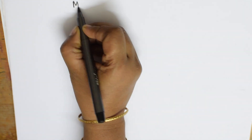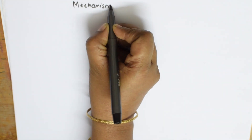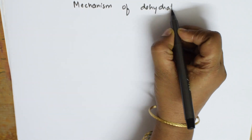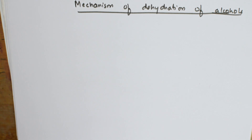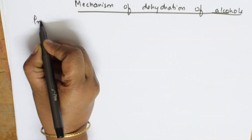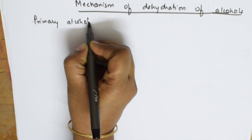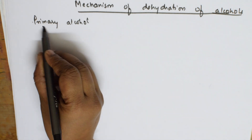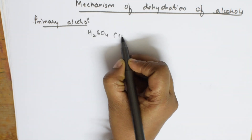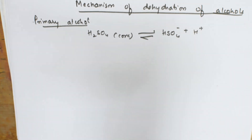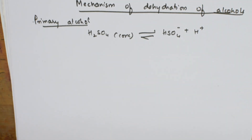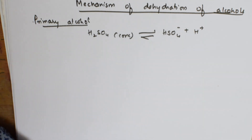Now let me write the mechanism. The heading is: mechanism of dehydration of alcohols. In step one, we take primary alcohol. When we add concentrated sulfuric acid — the dehydrating agent — it dissociates into HSO₄⁻ and H⁺. There's nothing complicated here; the dehydrating agent simply dissociates into HSO₄⁻ and H⁺.